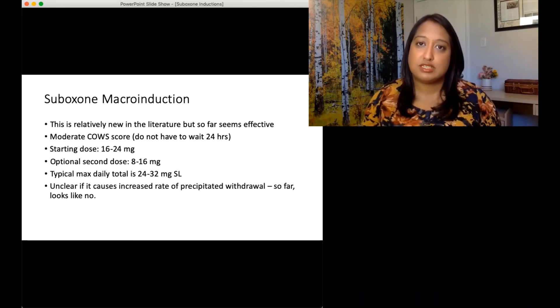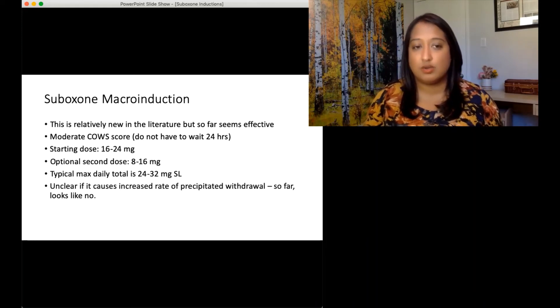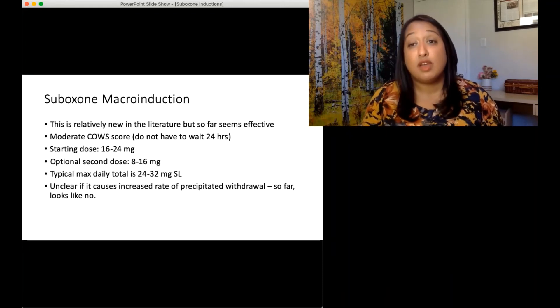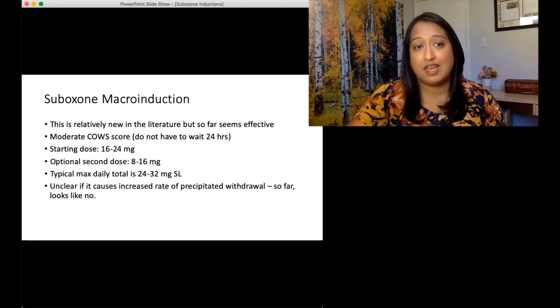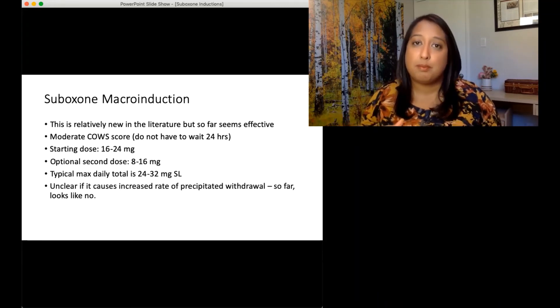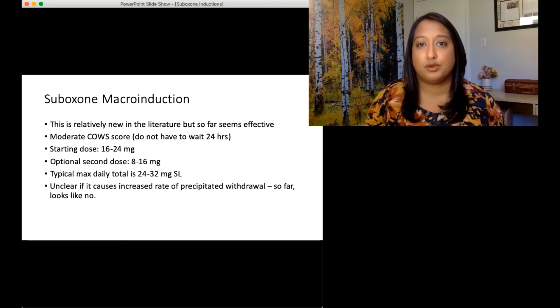So the first dose, 16 to 24 milligrams, you can go as low as eight, but then you run the risk of not having enough Suboxone in there that they're going to precipitate. And then you have an optional second dose that can be an hour afterwards or later that day. And that's another eight to 16 milligrams that you can add there. Typical max daily total being 24 to 32 milligrams.